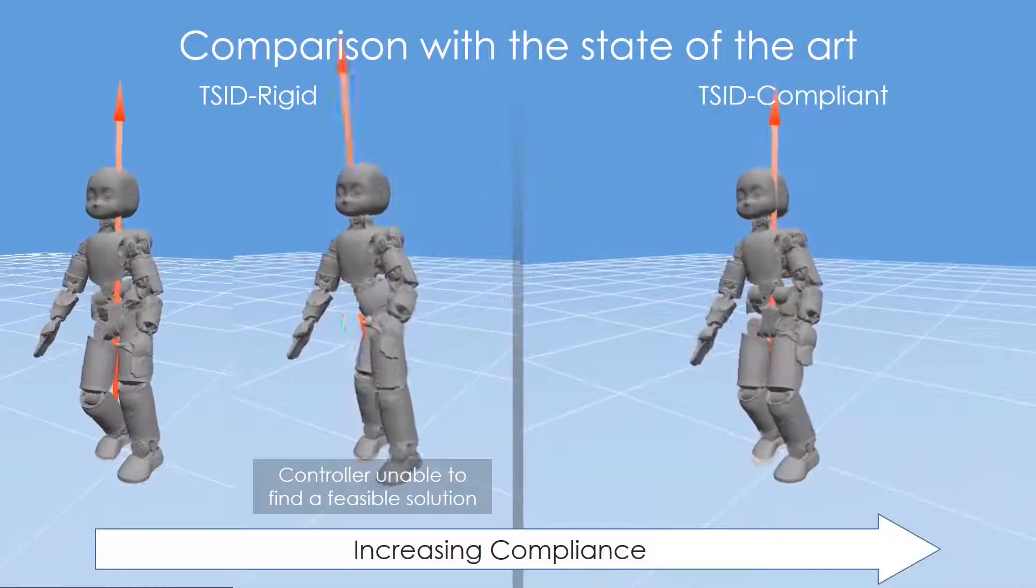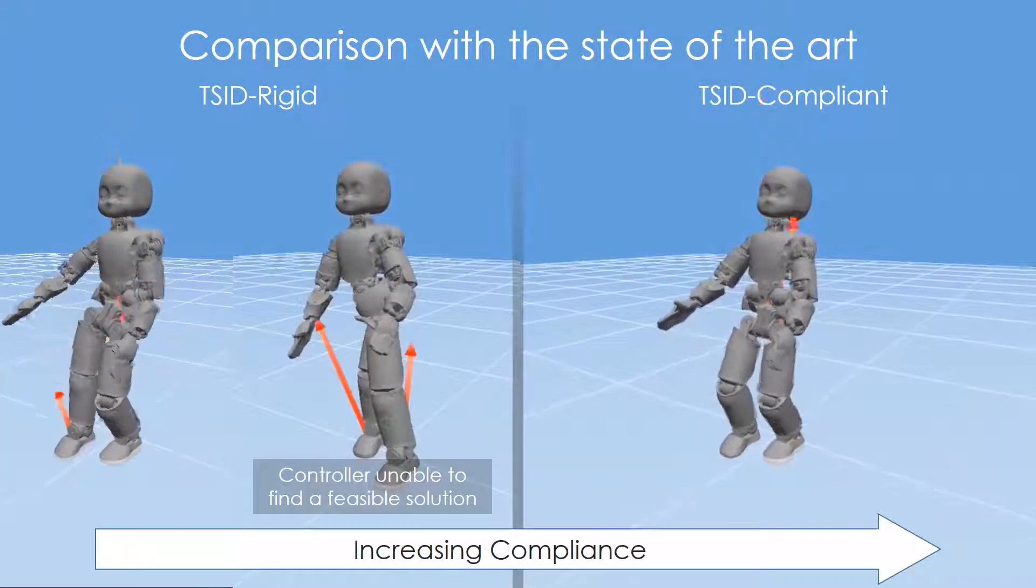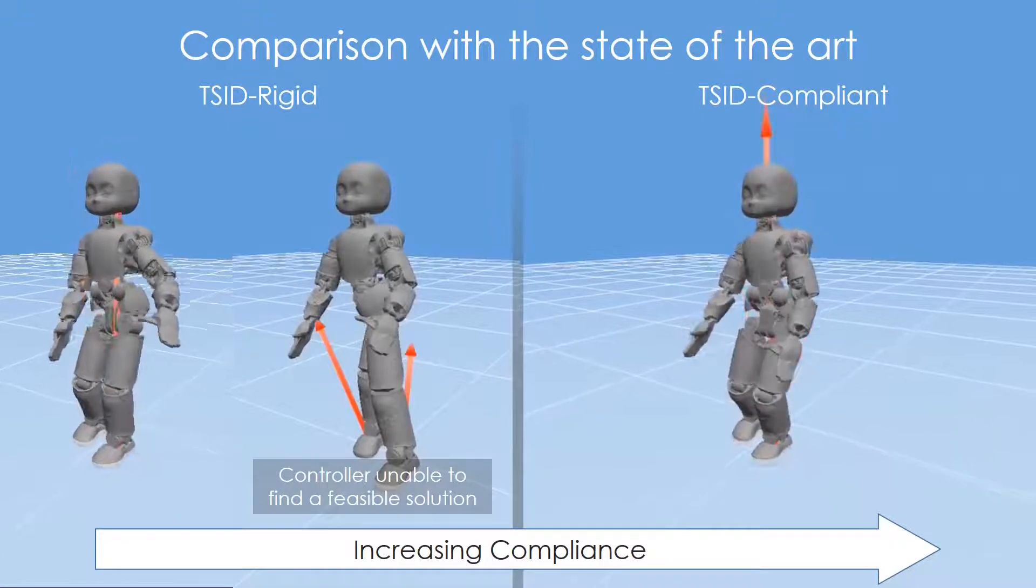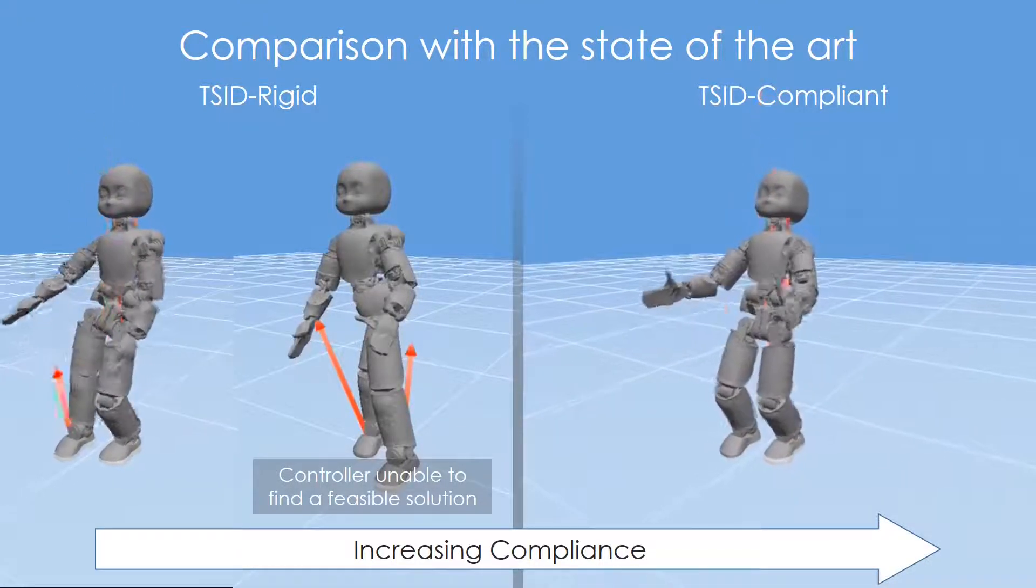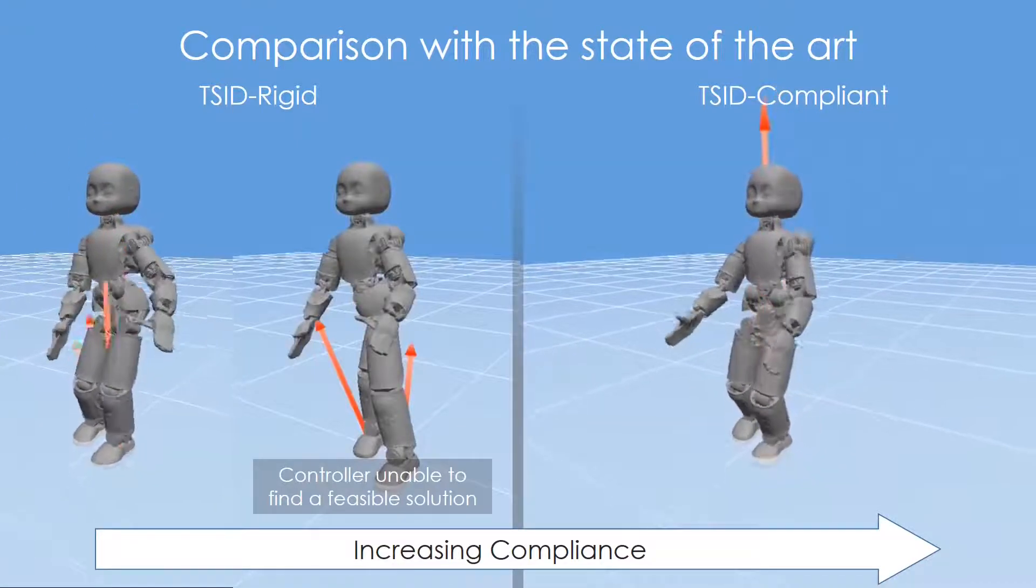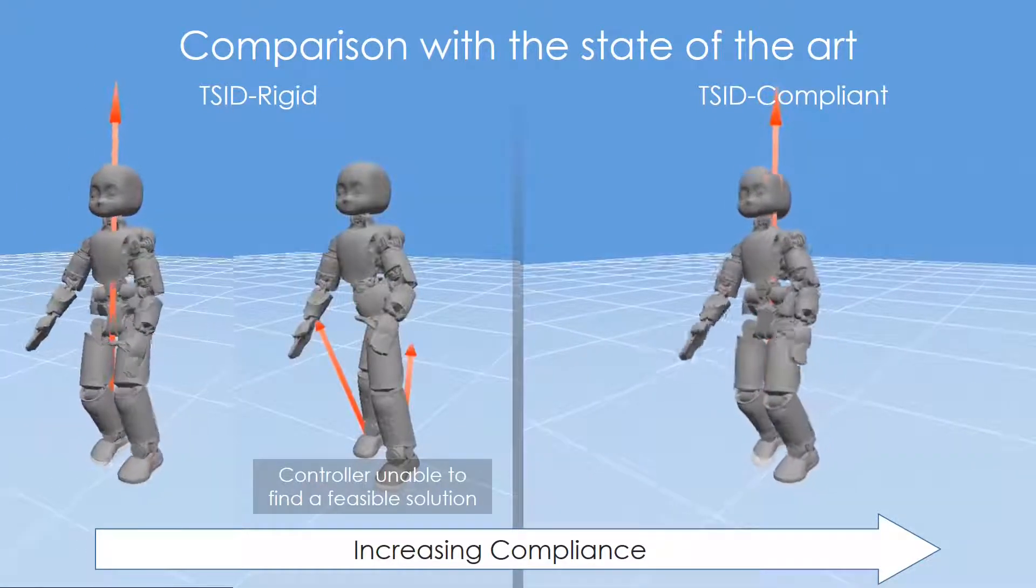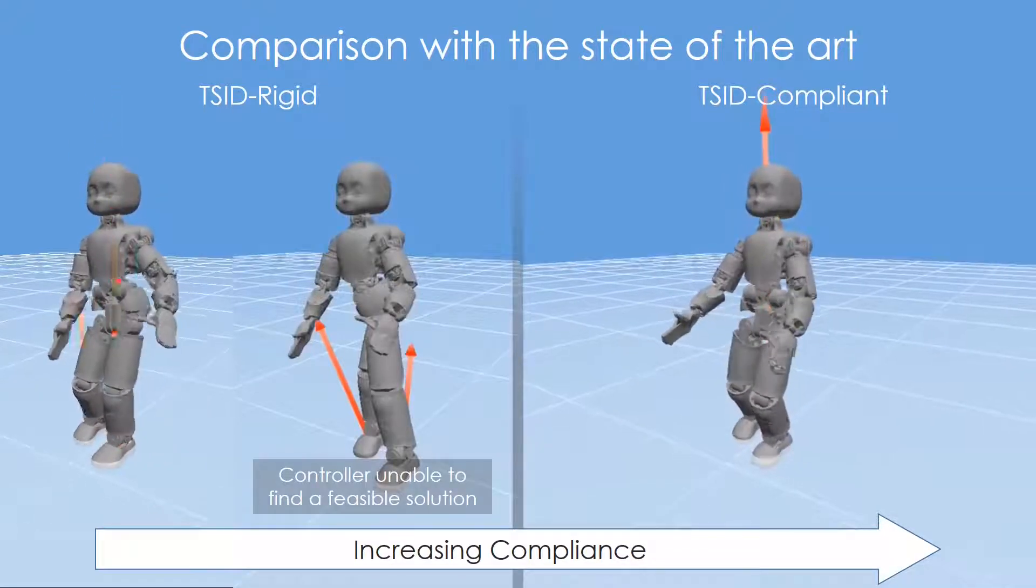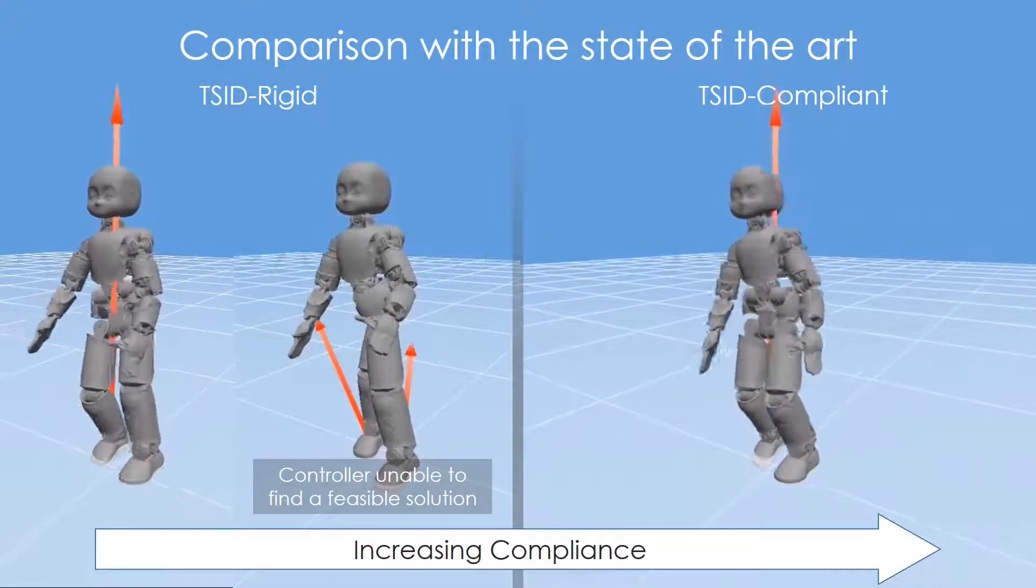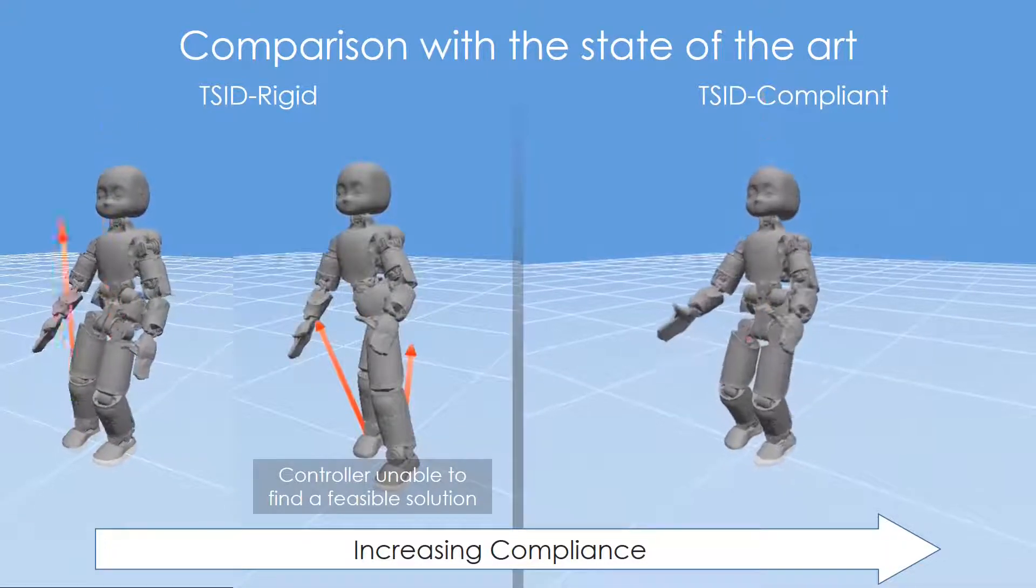When the contact between a robot and its surrounding environment is stiff, controllers based on rigid contact work reasonably. However, when the compliance of the environment increases, it is pivotal to design contact models that take into account contact stiffness and damping, which can then be incorporated in feedback controllers.